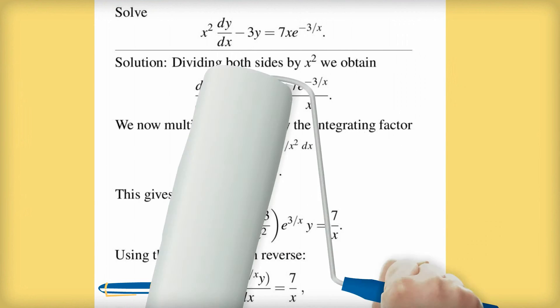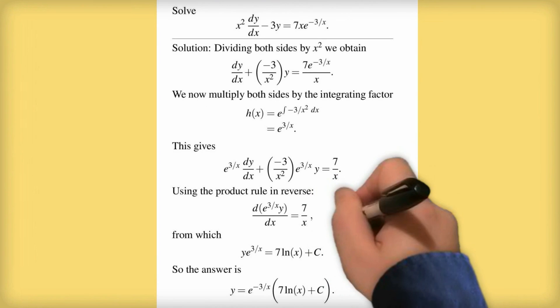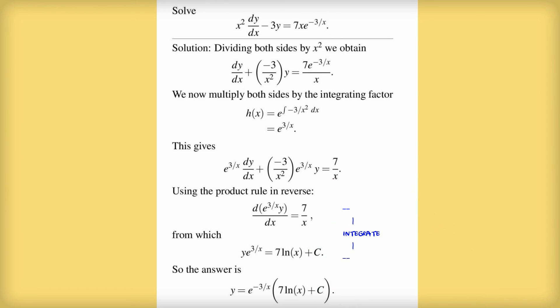Now once we've got it in this form, obviously it's just easy to integrate both sides with respect to x and for those of you that were paying attention during the lecture on fundamental theorem of calculus, you'll know that if you take the integral of the derivative of something here, well, we'll just get the original term. So we'll get y times e to the power of 3 divided by x. And on the right hand side, we'll get 7 times log of x plus a constant c. And once we got that, we just divide both sides by e to the power of 3 divided by x and we get our solution.